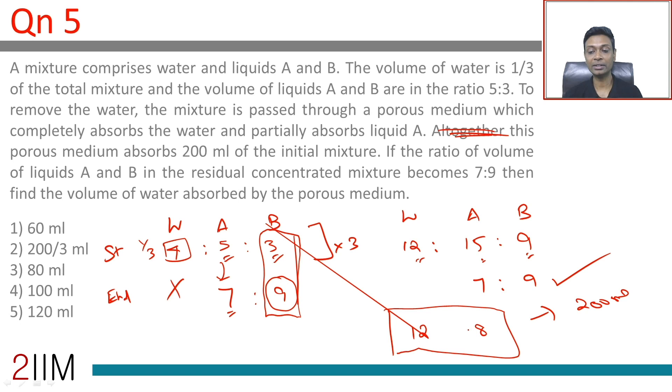Twelve plus eight is 20, and we're talking about 200 ml. So we take out 120 ml of water and 80 ml of A. Find the volume of water absorbed by the porous medium. All the water gets absorbed: 120 ml.